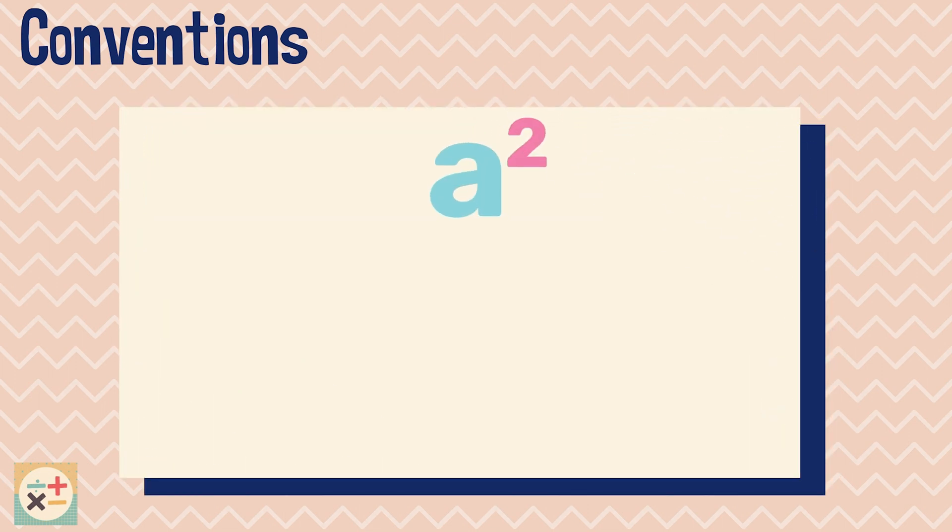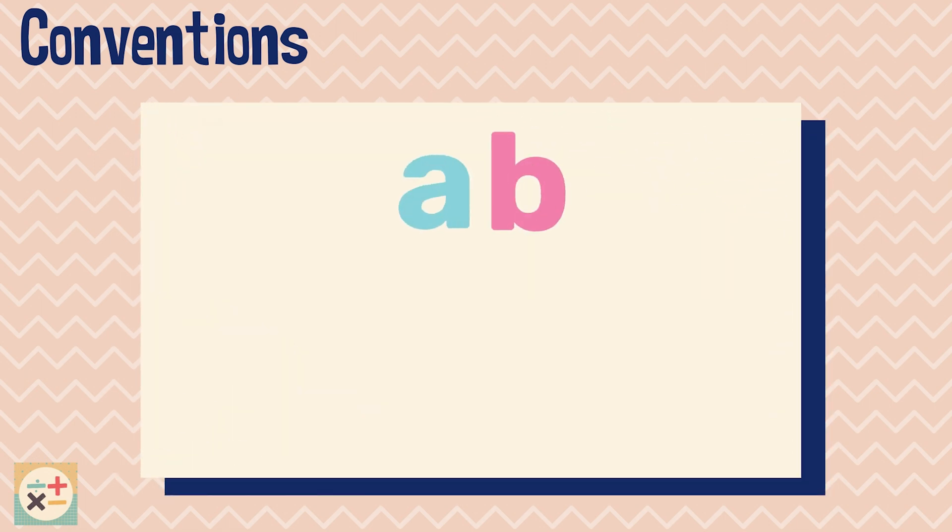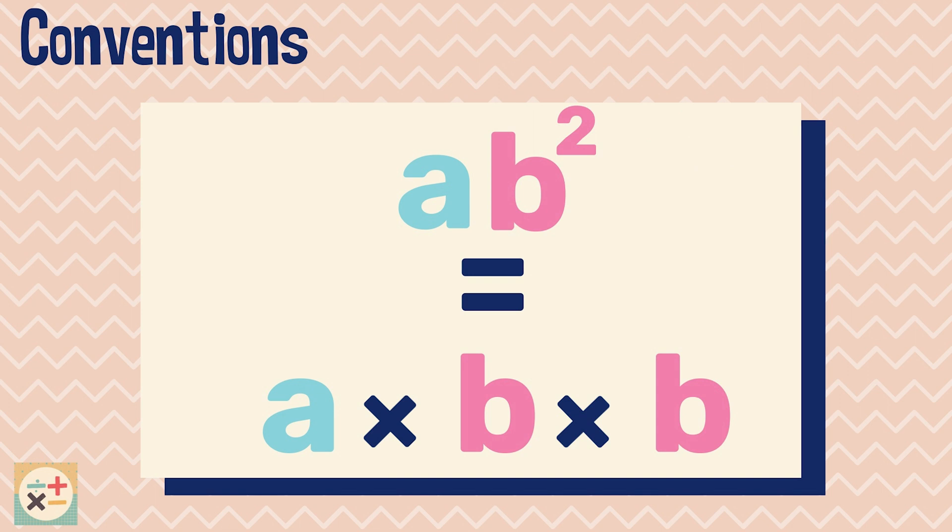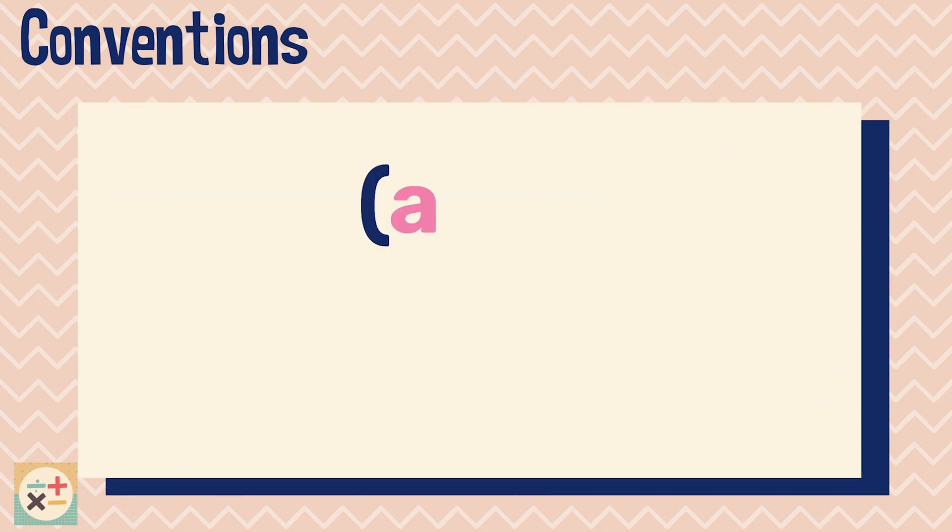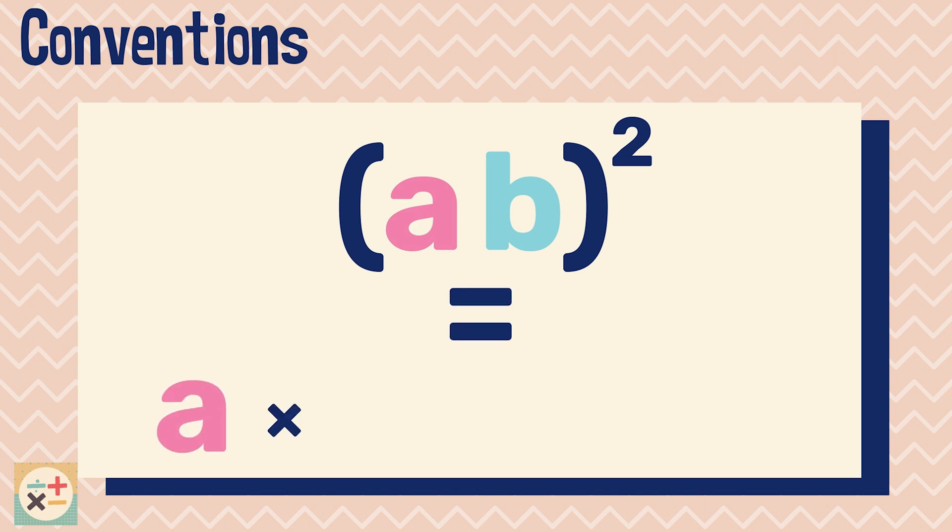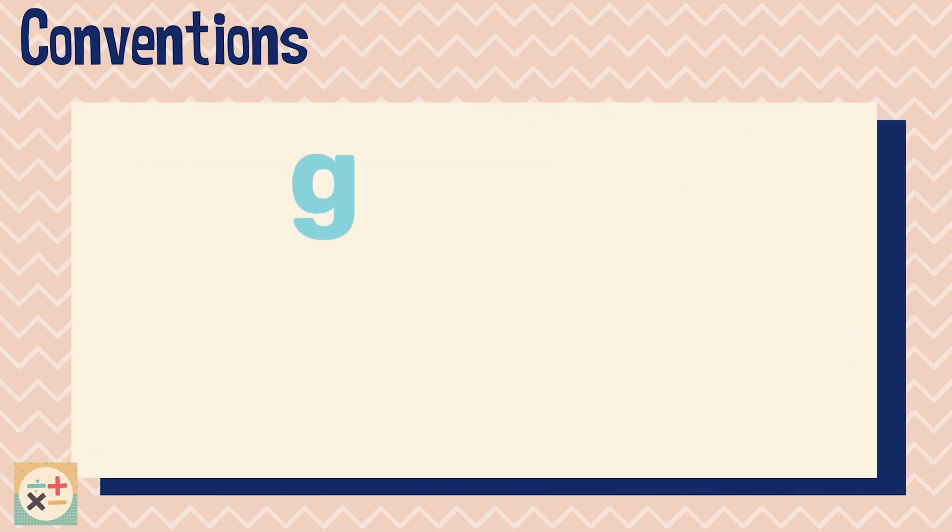When a letter is squared this means you times it by itself. For this example only the b is squared. But in this example with brackets, both letters would be squared. Whereas in this example, only the letters inside the brackets would be cubed.